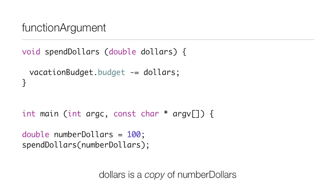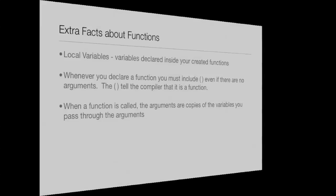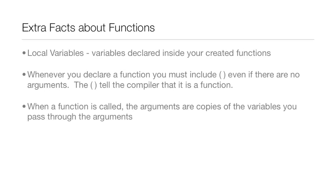but it'll make sense once you see it in code. Now, some extra facts about functions: local variables are variables you've declared inside your created functions. Whenever you declare a function, you must include parentheses even if there are no arguments. The parentheses tell the compiler this is a function.